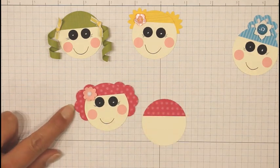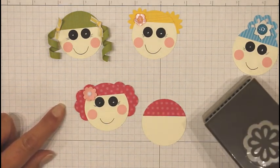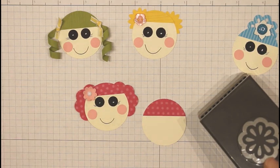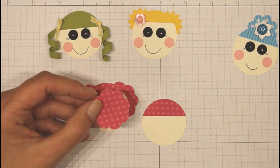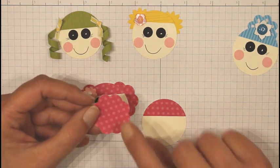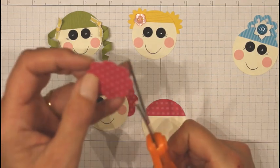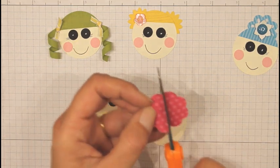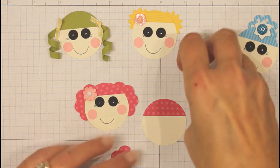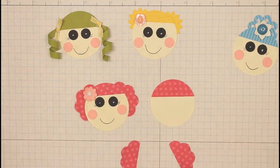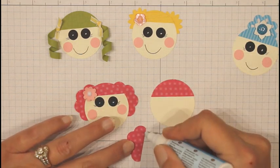Now to do her hair on the sides, I'm using the Blossom Bouquet Triple Layer Punch. Unfortunately, this punch is retired, but I did punch out the largest flower from that punch and we'll just cut it in half. Apply some glue on each side.